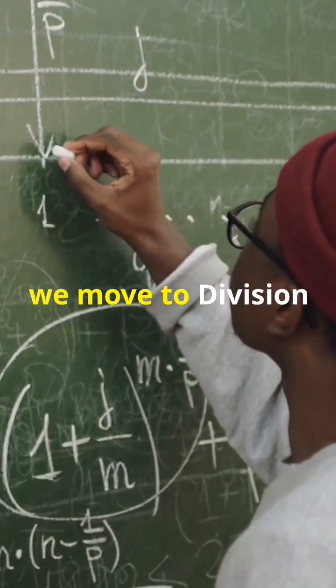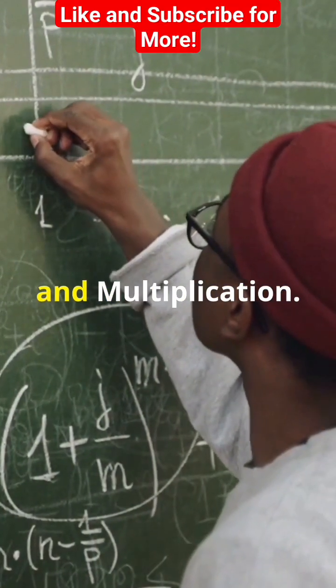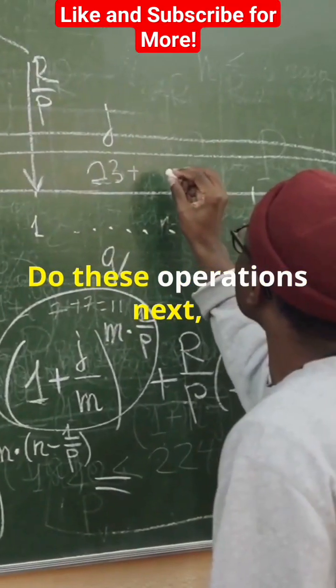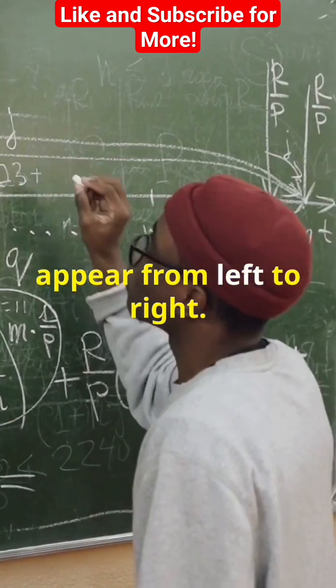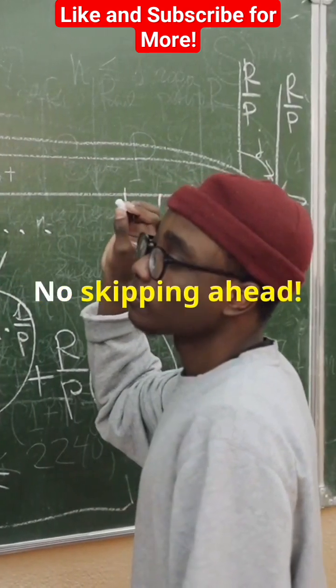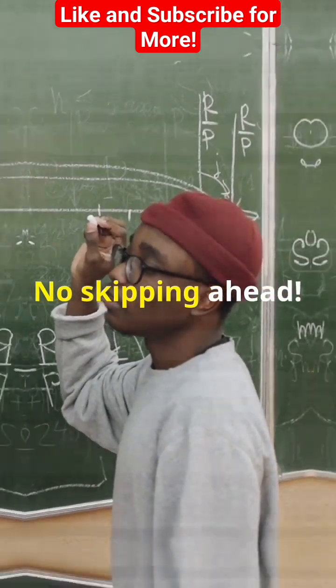Then we move to division and multiplication. Do these operations next, and remember, go in the order they appear from left to right. No skipping ahead.